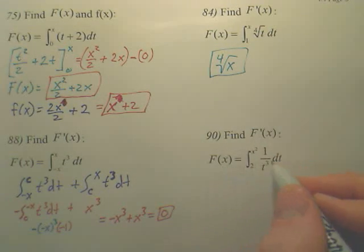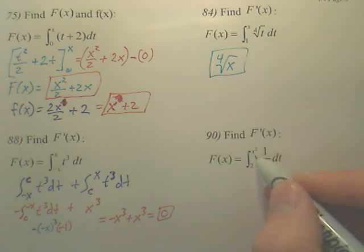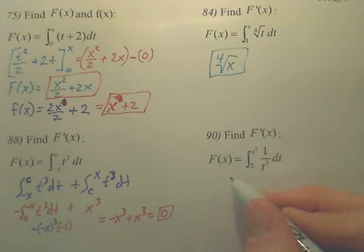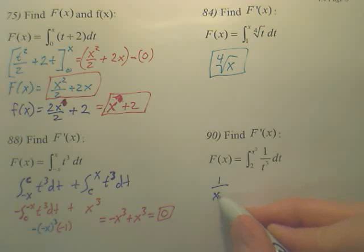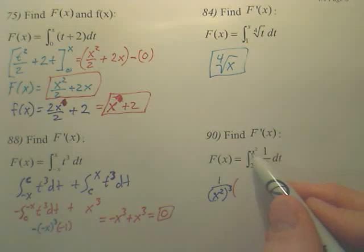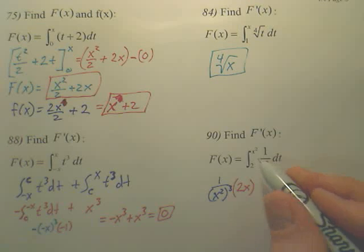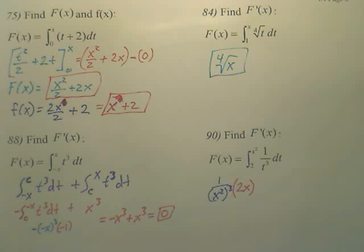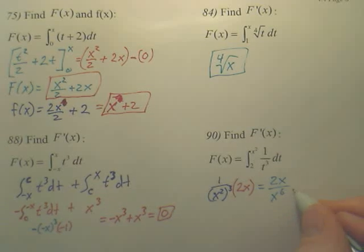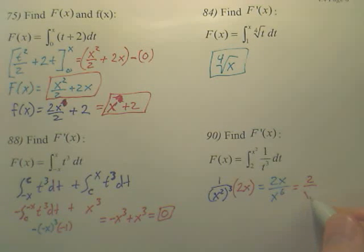Number 90. We're going to derive this. This one looks a lot like this one, except it's an x squared on top. So to do this one, when you derive, you basically plug the x squared in. So you're going to get 1 over x squared to the third. But you then, because this is not just x, you have to derive it. So we now multiply by the derivative of x squared. So the derivative of x squared is 2x. So this will be 2x over x squared to the third is x to the sixth, which your answer is 2 over x to the fifth.